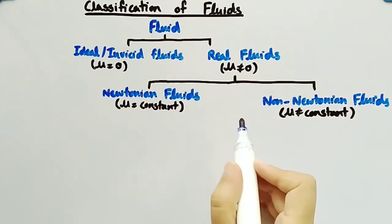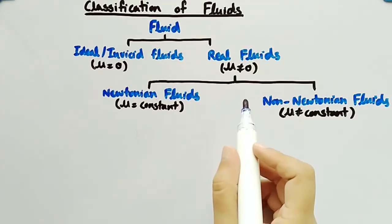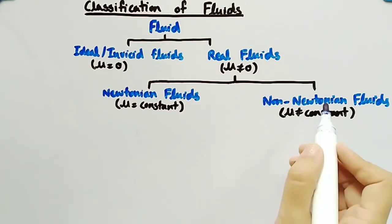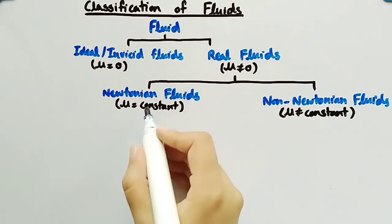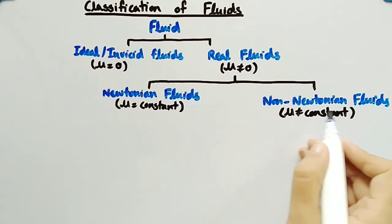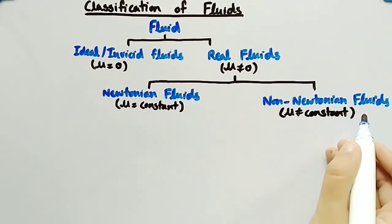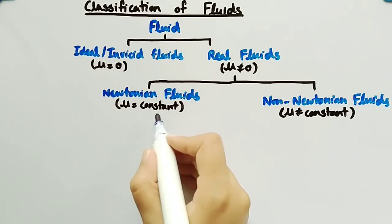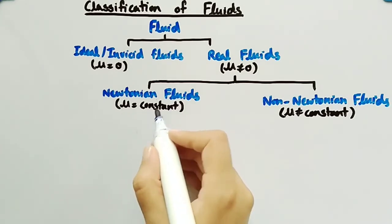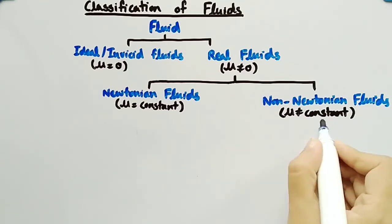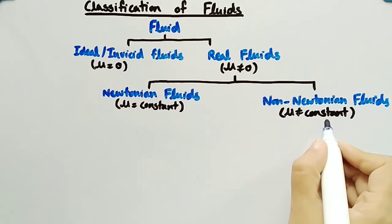Real fluids are further divided into two categories: Newtonian fluids and non-Newtonian fluids. Viscosity in Newtonian fluids is constant, where viscosity in non-Newtonian fluids is not constant.